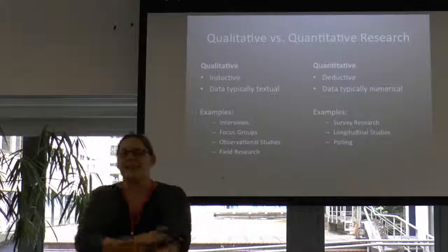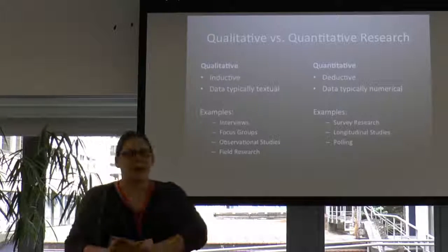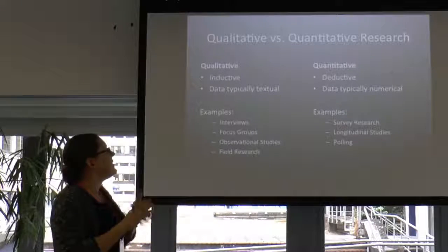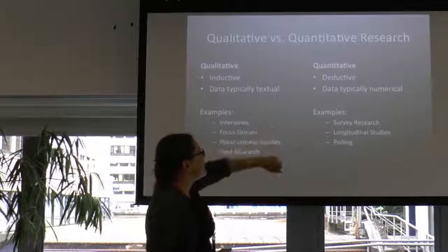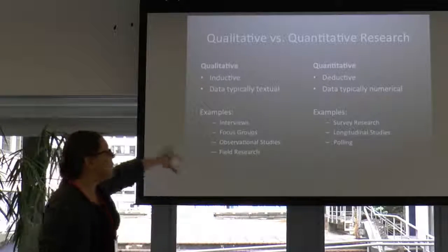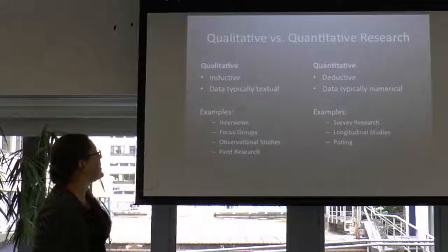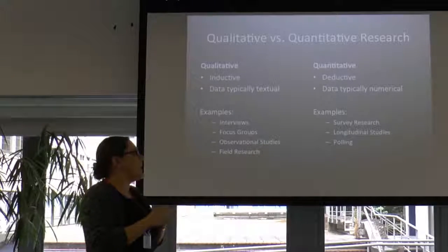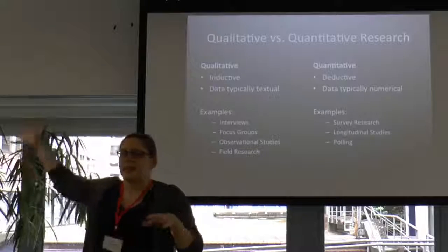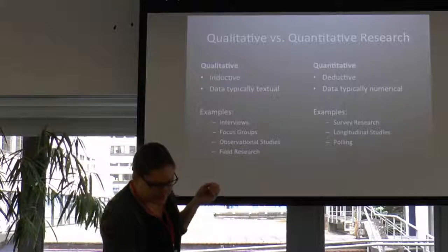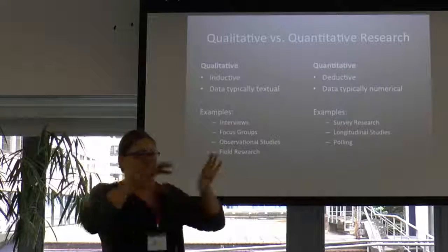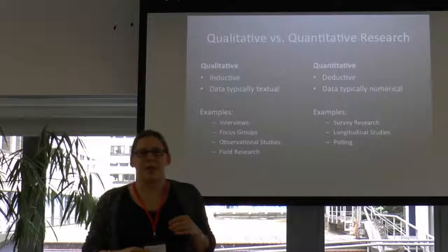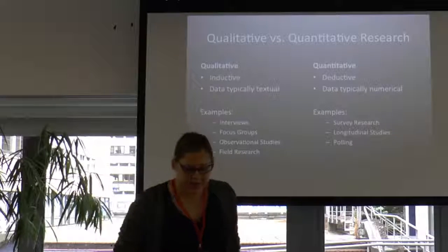This is a fairly basic description of the difference between qualitative and quantitative research. Qualitative research is inductive; the data is typically textual — interviews, focus groups, observational studies, field research. Quantitative research is deductive; typically numerical — survey research, longitudinal studies, polling, et cetera. This is how we get data. But I want to problematize this a little with the idea of commensuration as a social process.